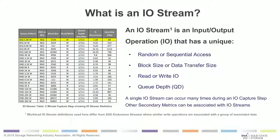From the perspective of an IO stream, we define that as an input-output operation with a unique random or sequential access pattern, unique block size, data transfer size, unique read or write direction, and its own defined specific queue depth. A single IO stream can occur many times during any capture. We can measure and chart a variety of secondary characteristics around that using the tool we're providing free of charge.